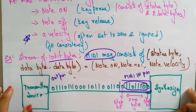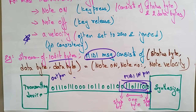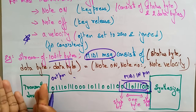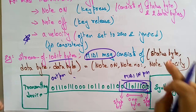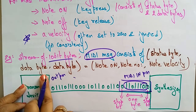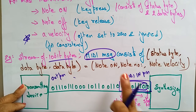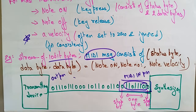So that's how MIDI messages work. A MIDI message includes a status byte and two data bytes, passed from the transmitting device to the synthesizer. The message contains Note On, note number, and note velocity information. In the next video, I'll explain the classifications of MIDI messages. Thank you.